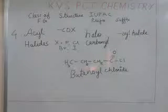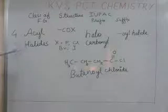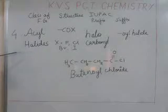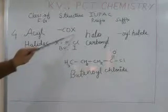Now in this class, we will move further with the next functional group called acyl halide. In acyl halide group, the structure is given by COX. Here, X is any halogen atom.